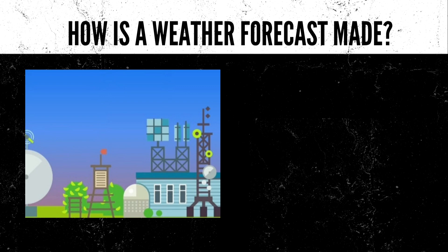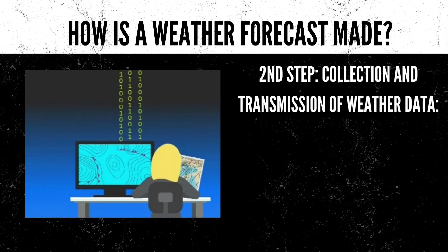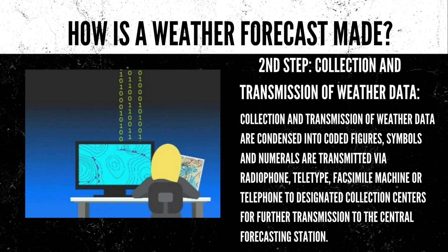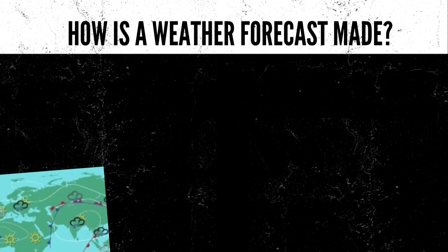How is a weather forecast made? First step: observation. A meteorologist forecasts weather through surface observations at least every 3 hours over land and sea, and upper air stations at least every 12 hours. Second step: collection and transmission of weather data. Weather data are condensed into coded figures, and symbols and numerals are transmitted via radio phone, teletype, or telephone to designated collection centers for further transmission to the central forecasting station.